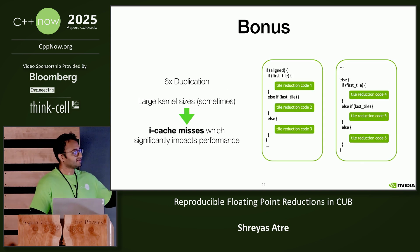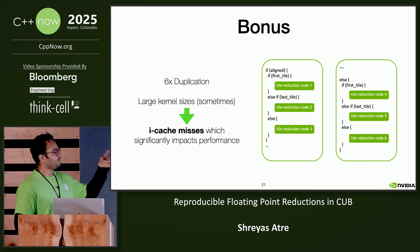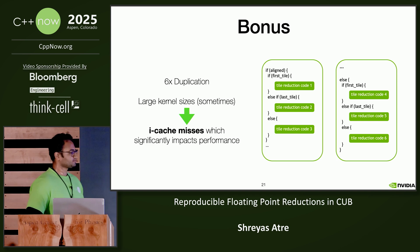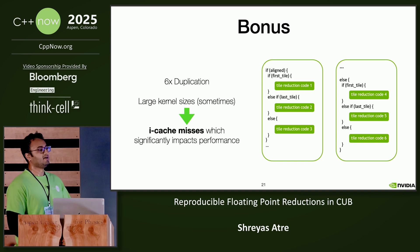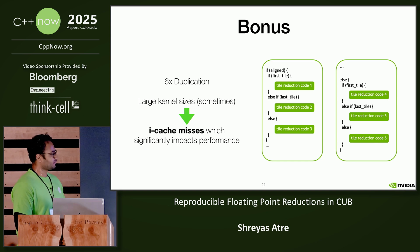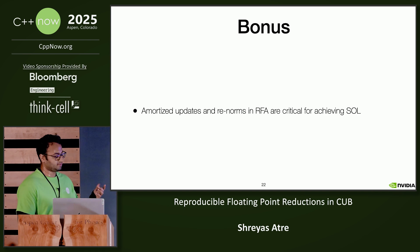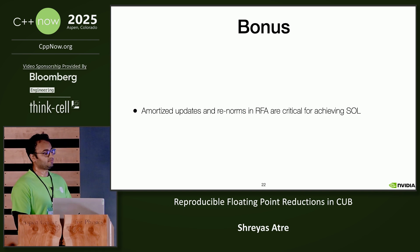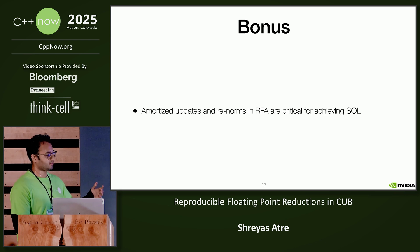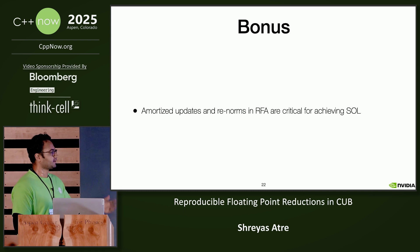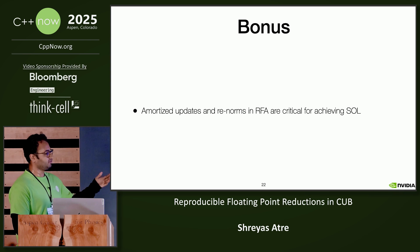Bonus: while doing this, we did see that we have several checks in place to check if the inputs are aligned or not, and whether it's first-tiled, last-tiled — all of this led to six times code duplication. For large kernel sizes, we saw terrible iCache misses. And this reproducible floating point accumulator needs to be used in a certain way — for example, if you run out of precision in the bins, you have to renormalize the whole bins, which takes additional time, and it really depends on how you use the floating point accumulator for achieving speed of light.